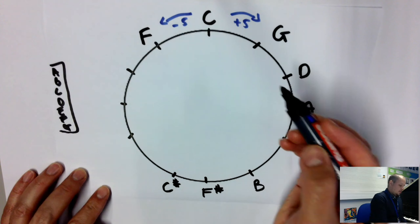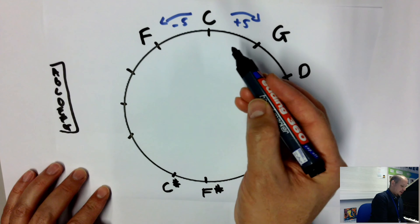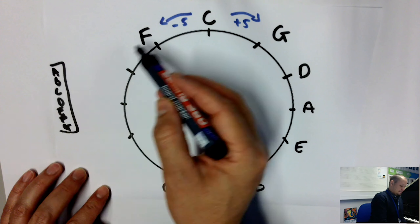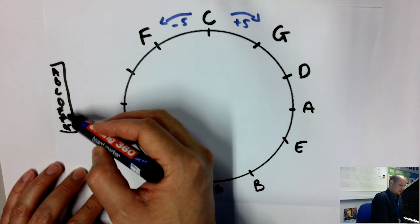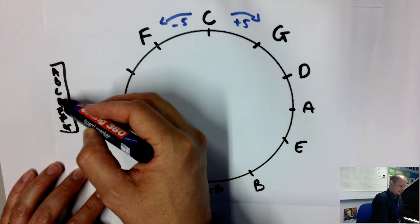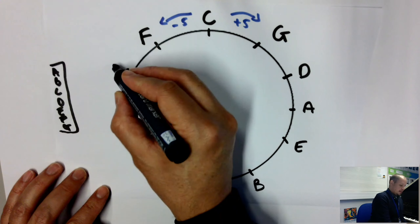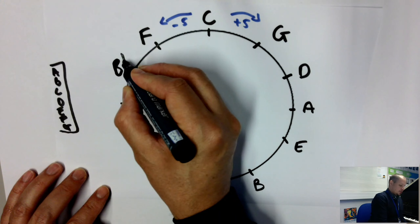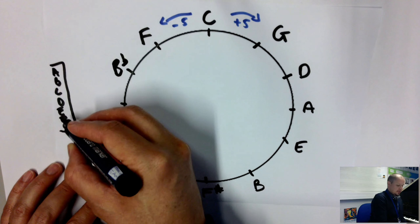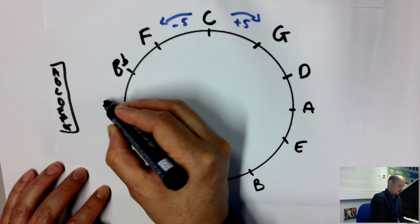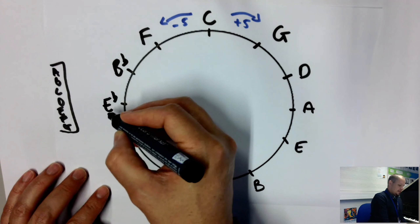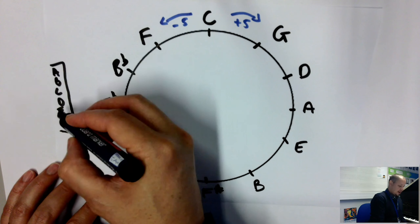Continuing counterclockwise by five each time: F, E, D, C, B flat — B flat major has two flats; then E flat major has three flats; A flat major has four flats.